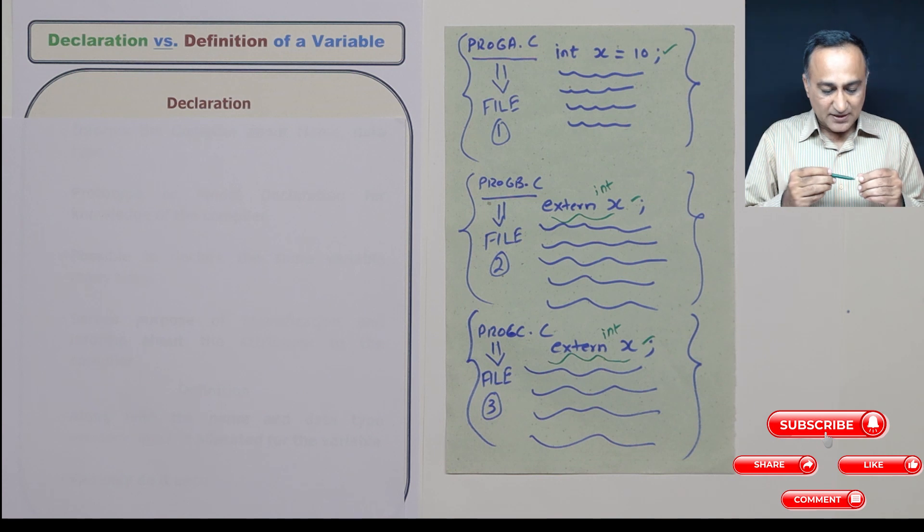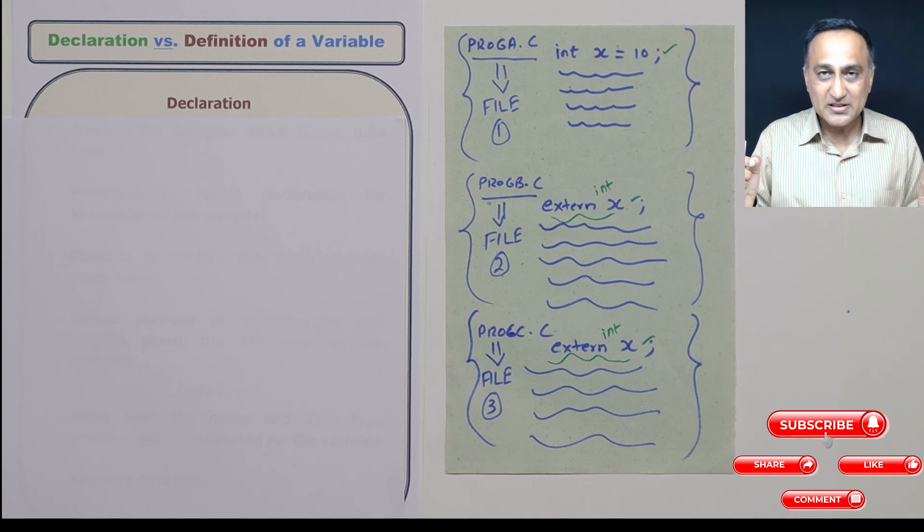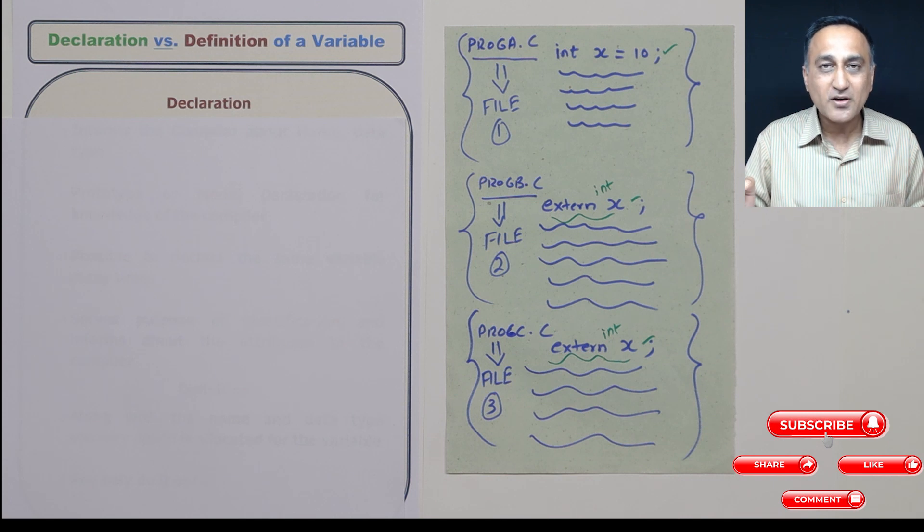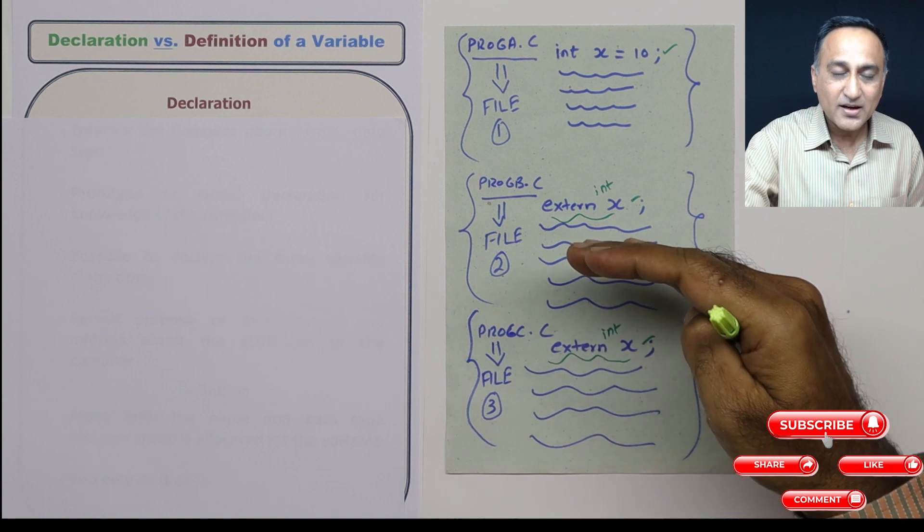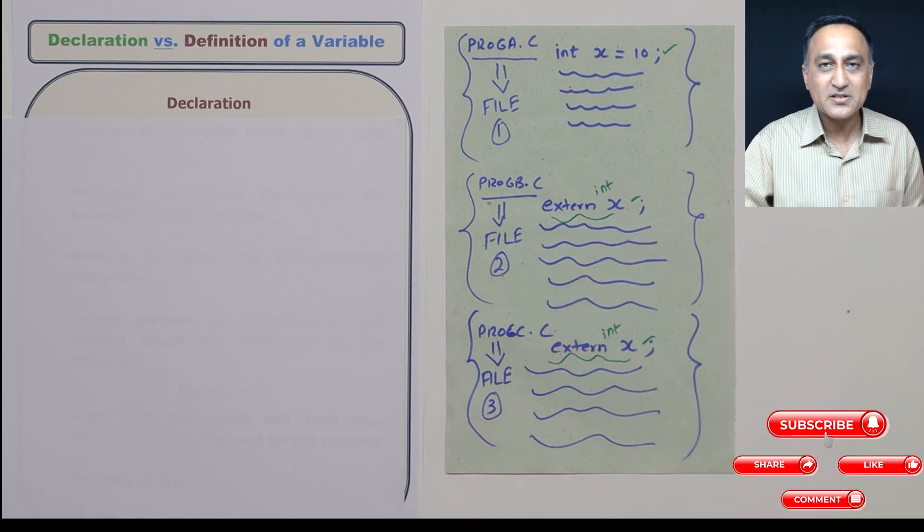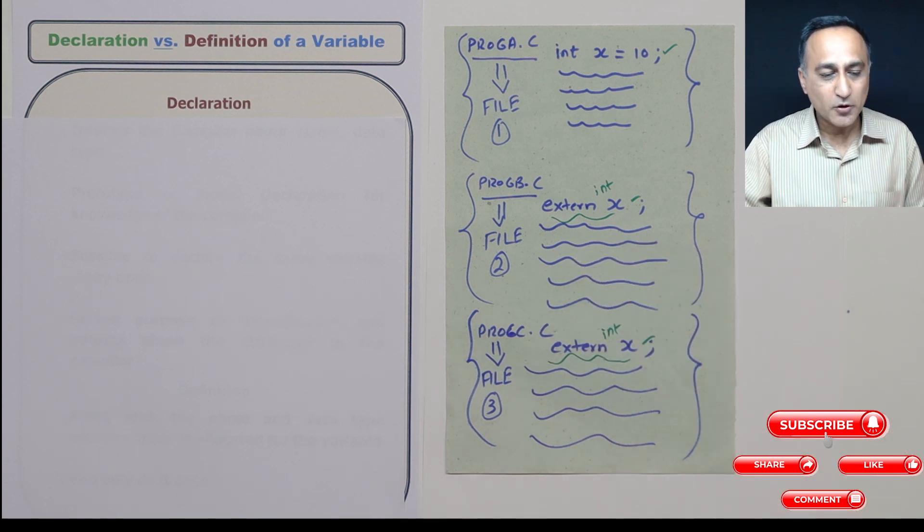So definition allocates memory space. You can do definition only once because you cannot allocate memory multiple times for the same variable. But variable declaration you can do as many number of times as you really need to do in your program.